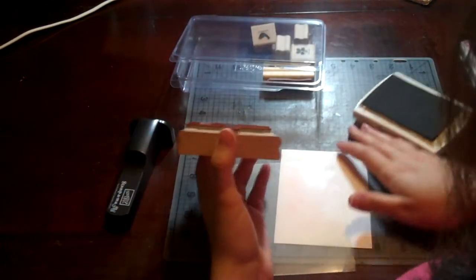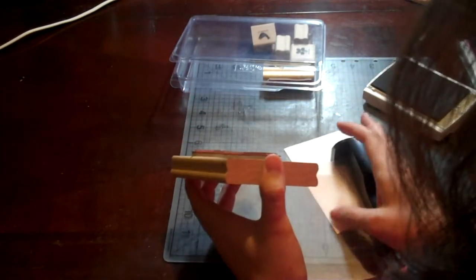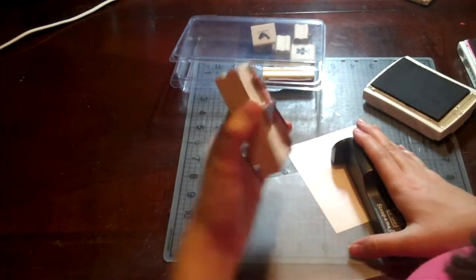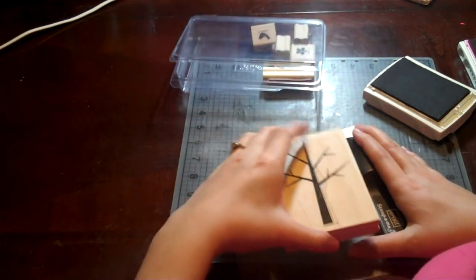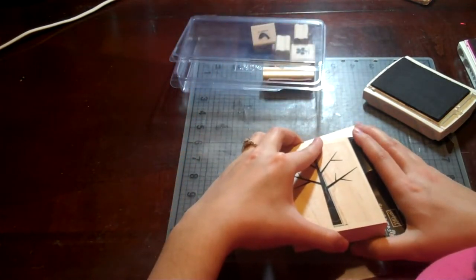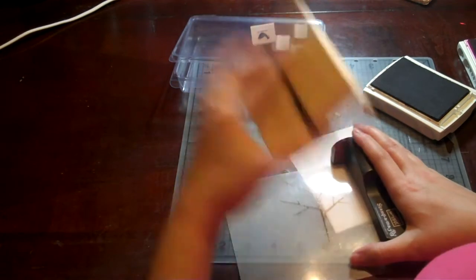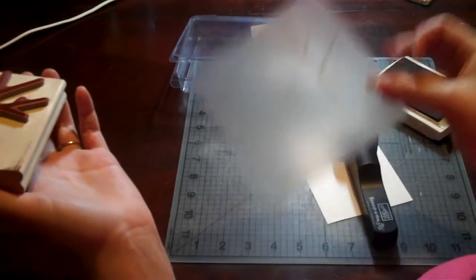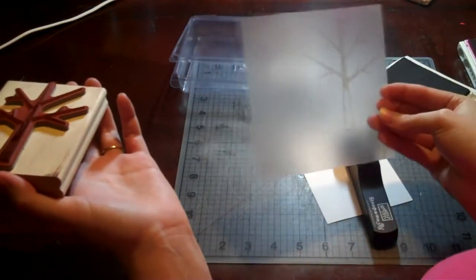You put your little plastic sheet in the corner of your Stampamajig straight down. You're going to take your stamp and put it straight in that same exact corner and stamp straight down. Now you can see there's the tree on my little clear sheet.